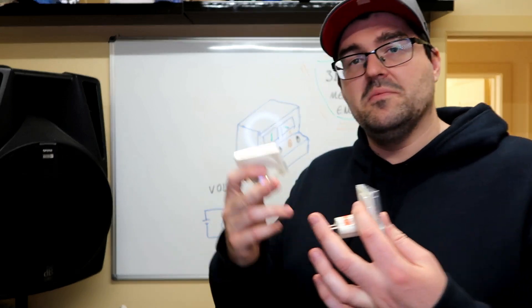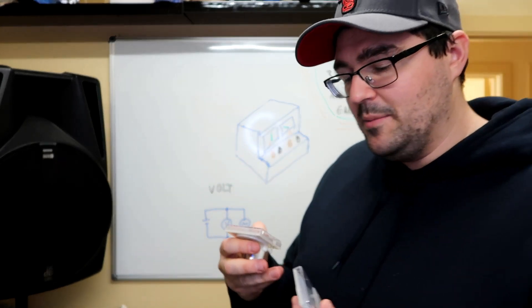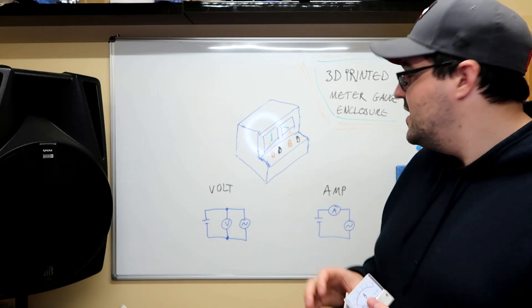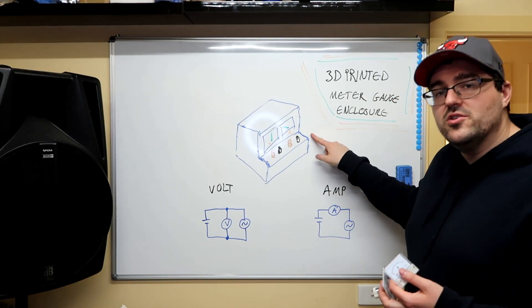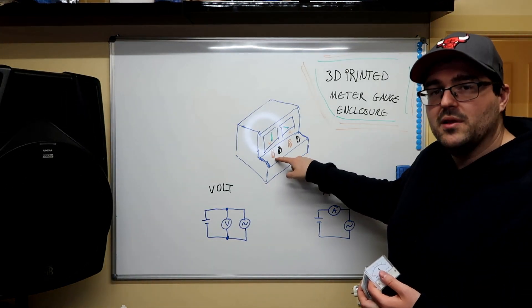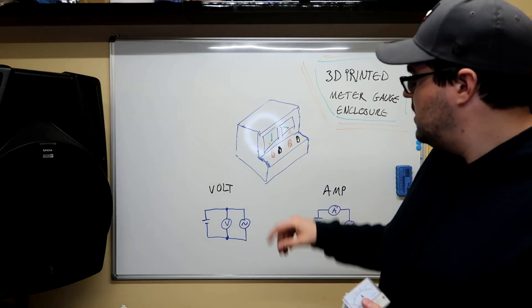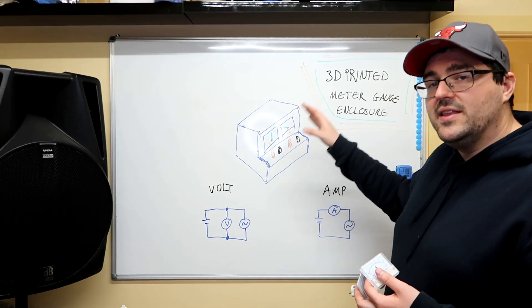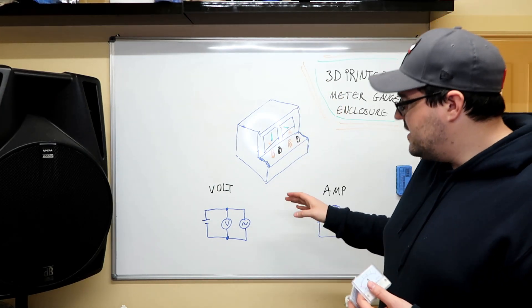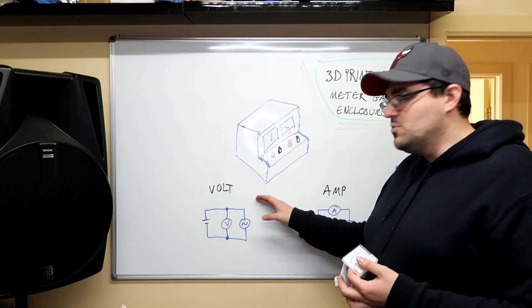What I'm gonna do is actually 3D print this enclosure which I'm going to add some banana plug leads on the front. I'll have the volt meter on one side, the amp meter on the other.